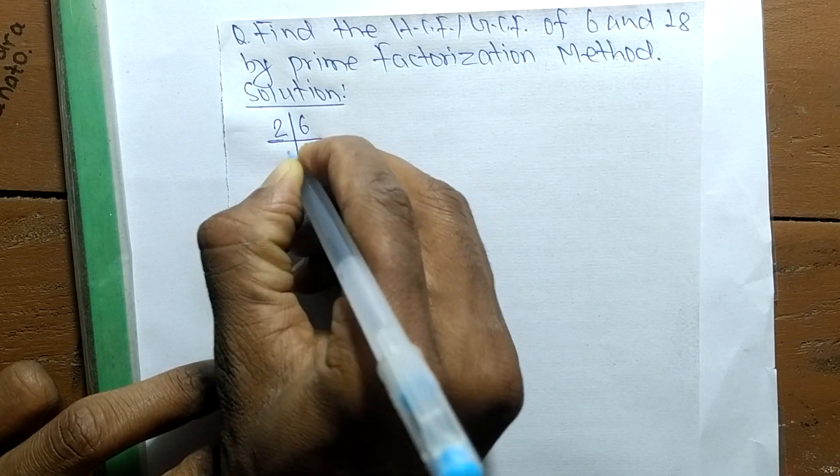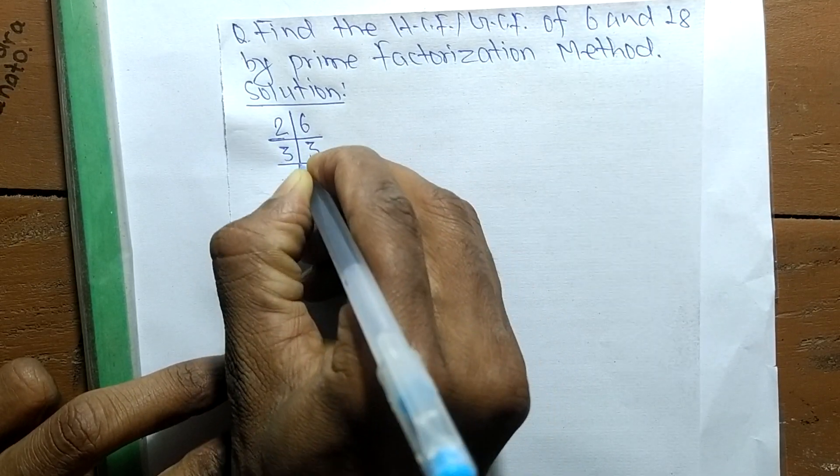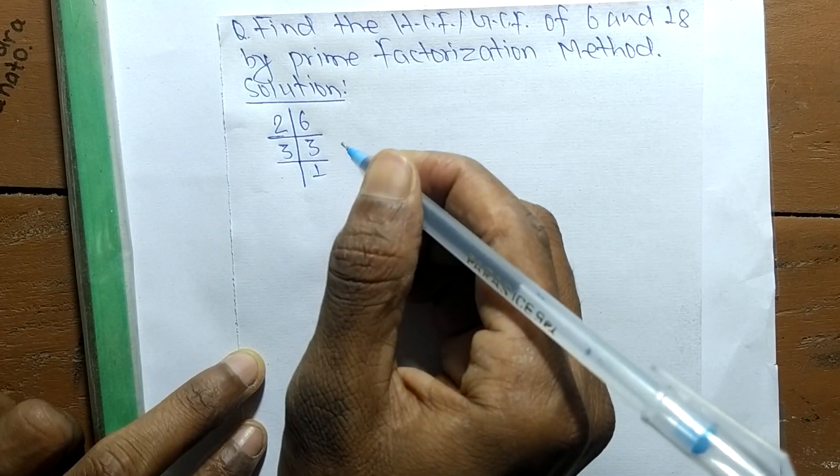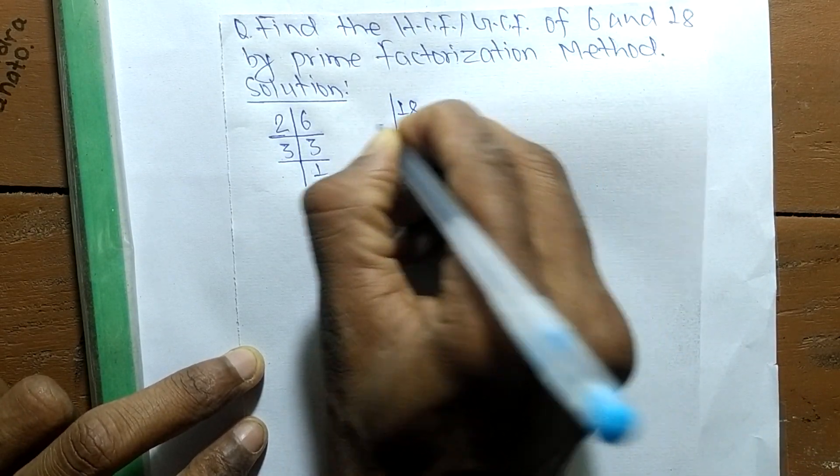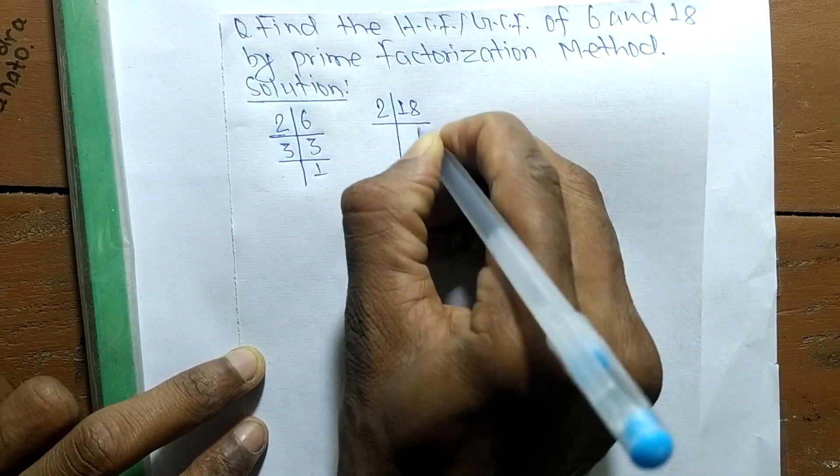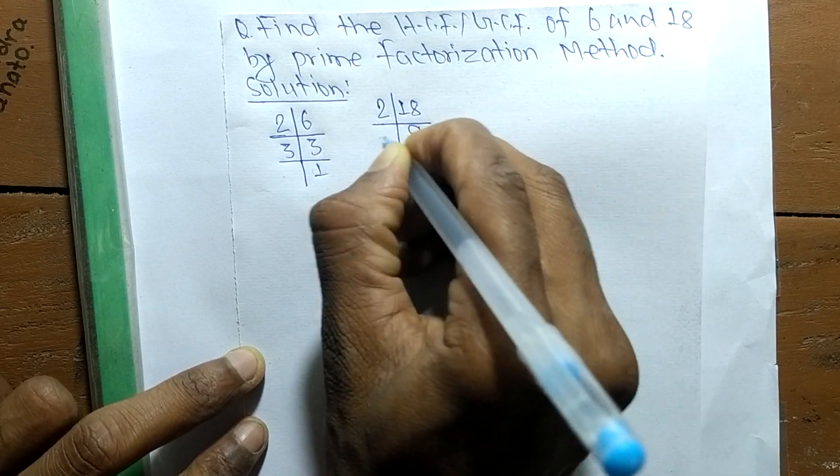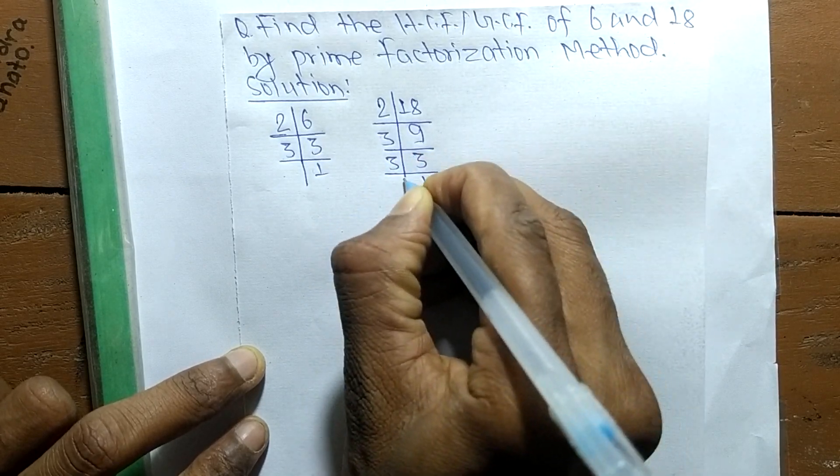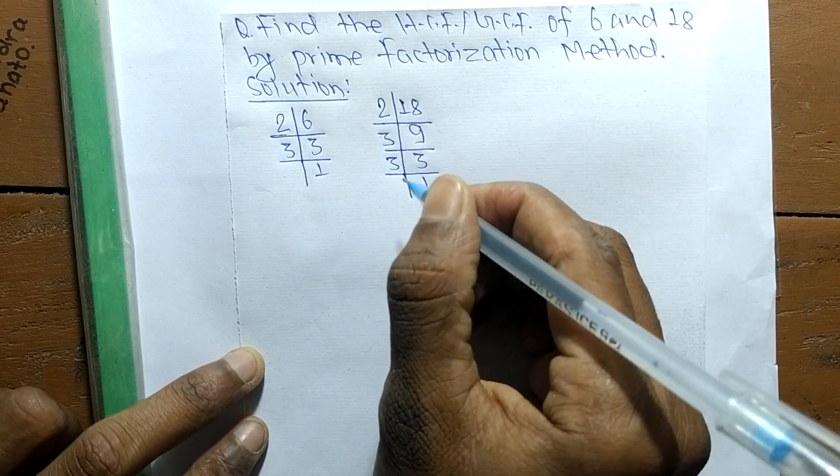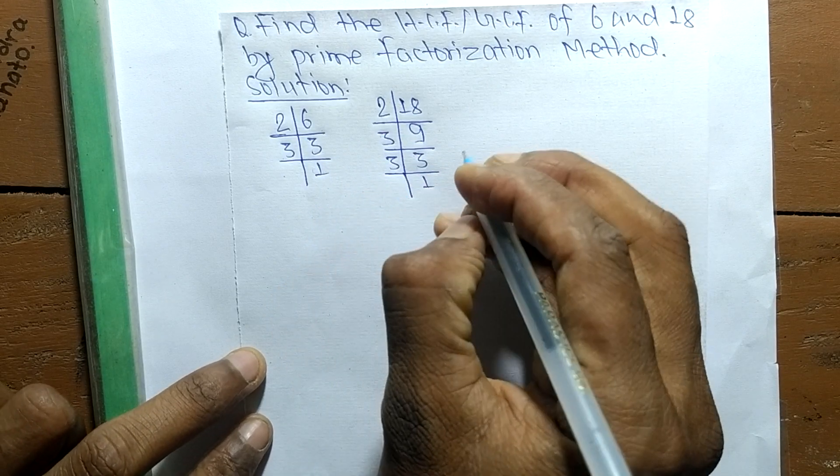2 times 3 means 6, and 3 times 1 means 3. The prime factors of 18: it is 2 times 9 which means 18, 3 times 3 means 9, and 3 times 1 means 3.